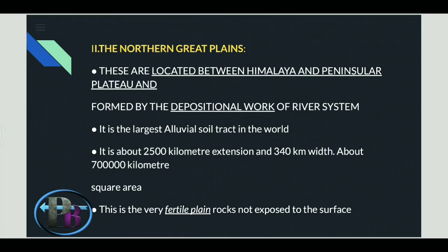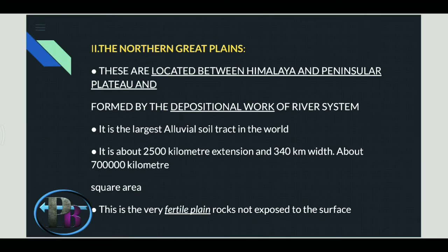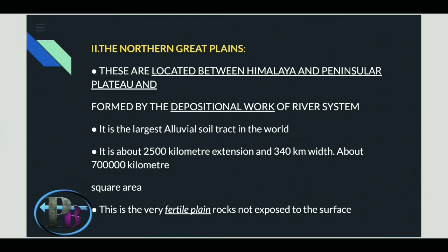The second important physical feature is the Northern Great Plain. It is located between the Himalaya and the Peninsular Plateau. It was formed due to the depositional work of the river system. This is the largest alluvial soil tract in the world — after this, the Amazon has the next alluvial soil tract. It covers about 7 lakh square kilometers.